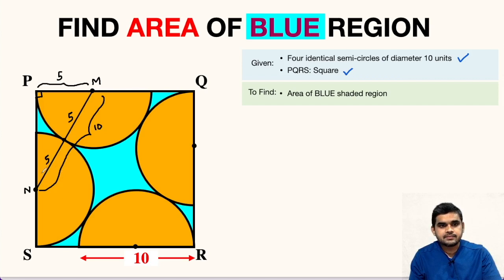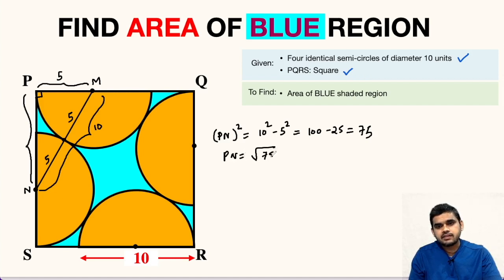So let us write here as 10. Now what about PN? So PN we can find using Pythagorean theorem. So let us find PN. So PN square will be 10 square minus 5 square, that is 100 minus 25, 75. So PN will be square root of 75, which gives us 5 times 5 times 3. We can write 5 root 3 units. So this distance is 5 root 3.